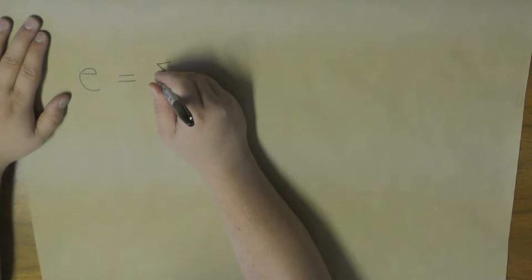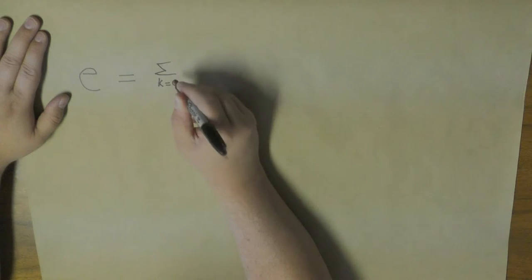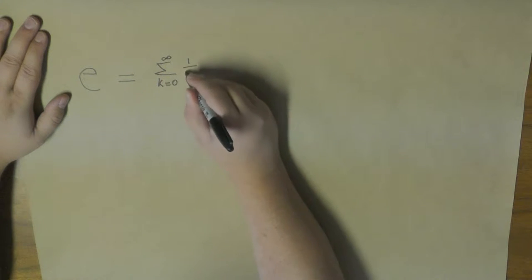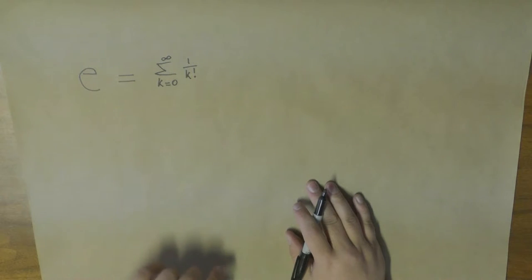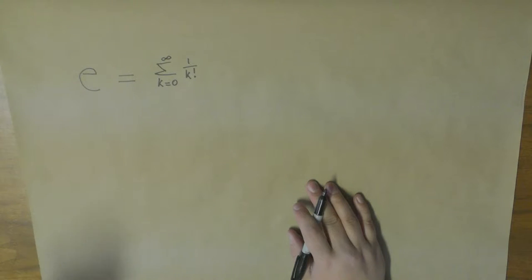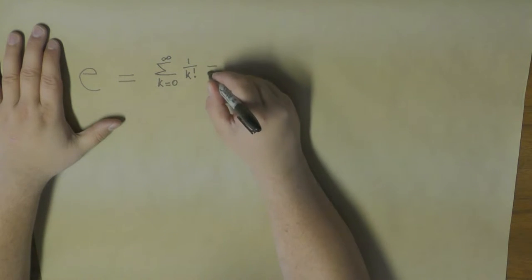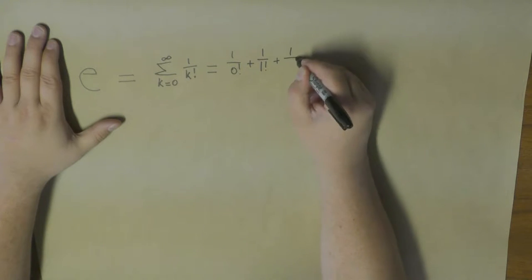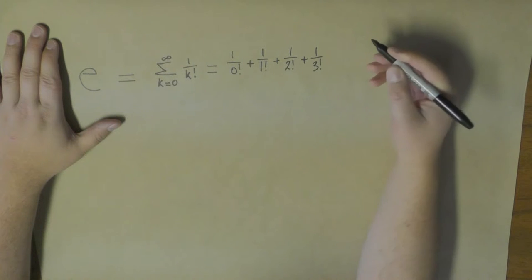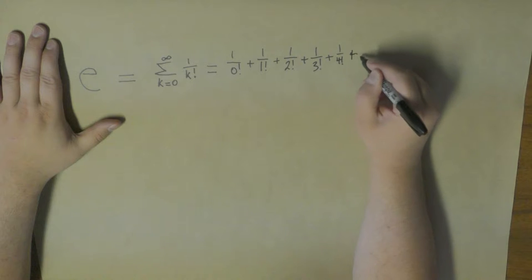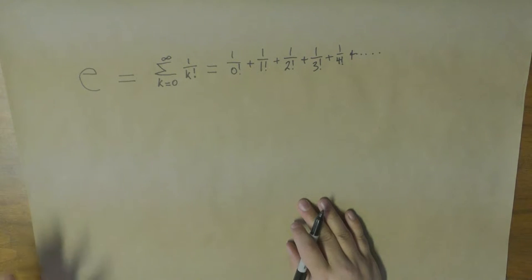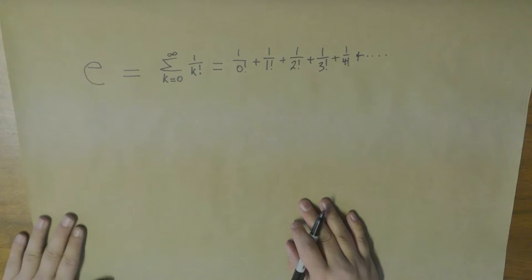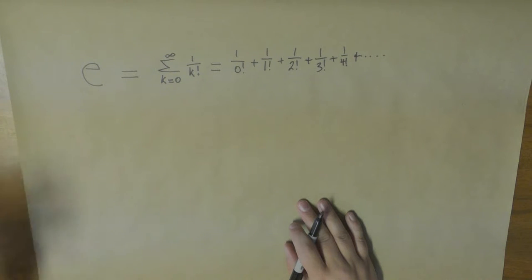And e itself can be calculated using this one. So let's take all integer values of k from 0 to infinity and add up the reciprocal of each value. So just to illustrate, this would be 1 over 0 factorial plus 1 over 1 factorial plus 1 over 2 factorial plus 1 over 3 factorial plus 1 over 4 factorial and so on. Now, that gives us the value of e — more precisely, the value of e to the first power, which is e.